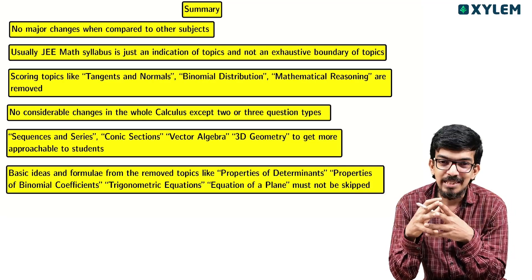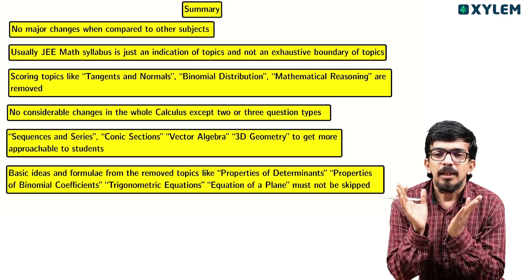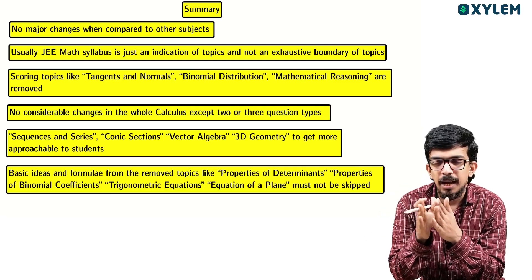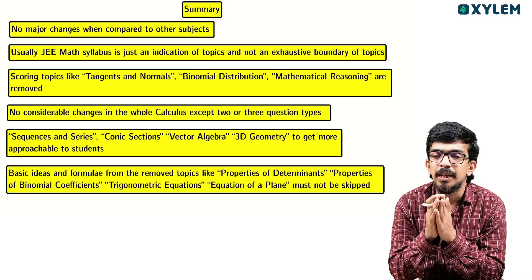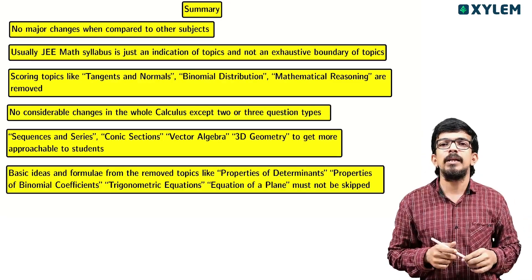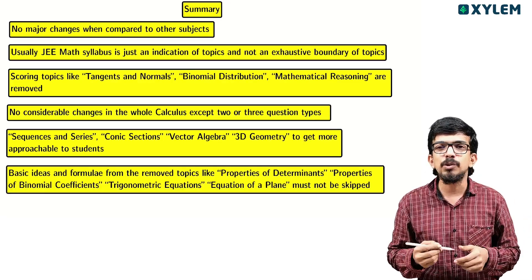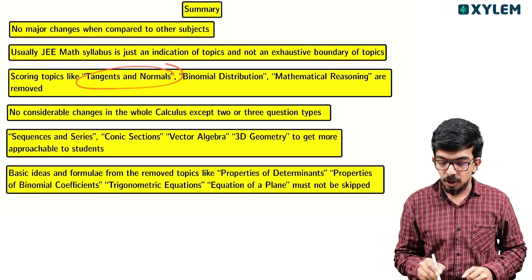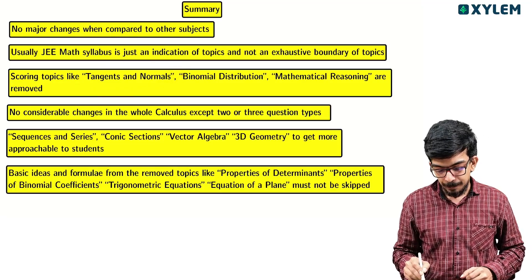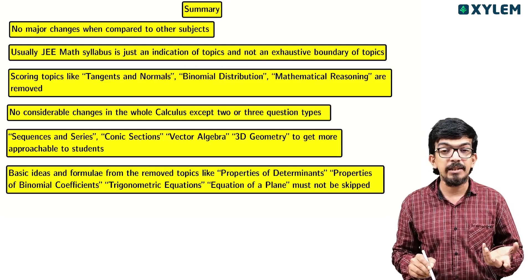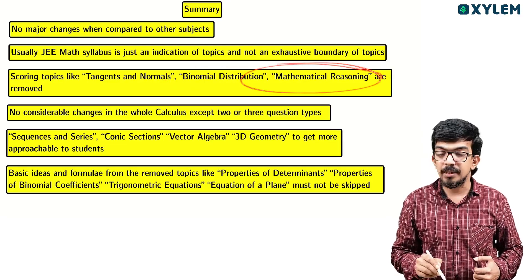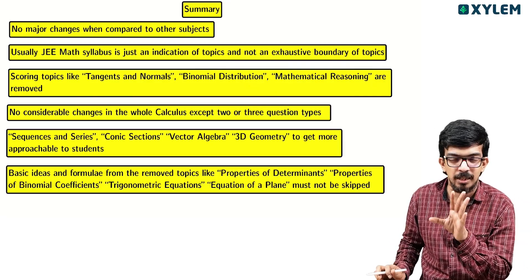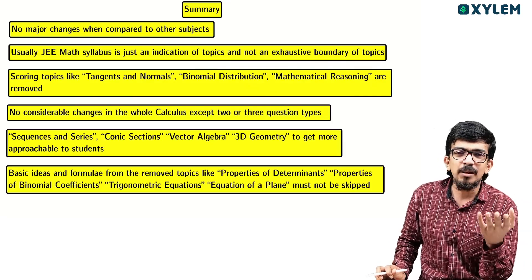You already realize that these changes have both advantages and disadvantages. One disadvantage is: if you have prepared topics like tangents and normals in calculus, probability and binomial distribution — which are easy topics — or mathematical reasoning, which is a sure-shot question, those topics are now removed. This is the disadvantage.